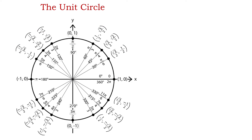Here we have quadrant 1, quadrant 2, quadrant 3, and quadrant 4. The unit circle shows a total of 16 angles, and these angles are given in both degrees and radians. All these angles are angles in standard position, meaning the vertex of each angle is at the center and the initial side is along the positive x-axis.